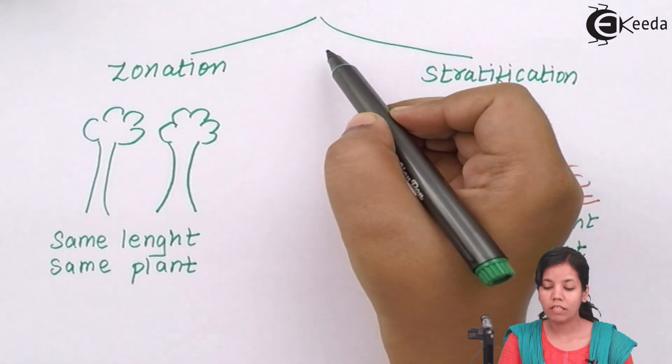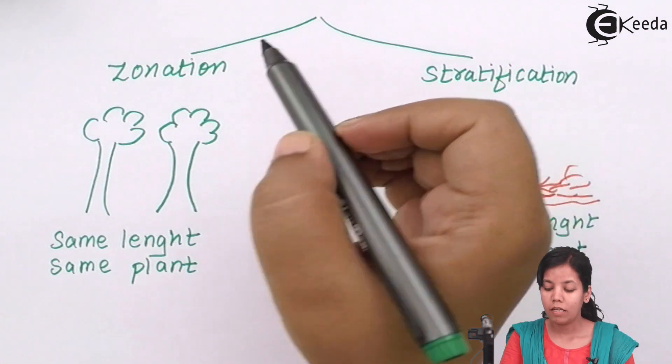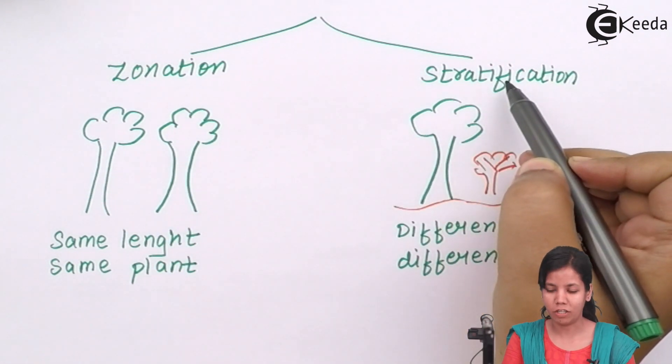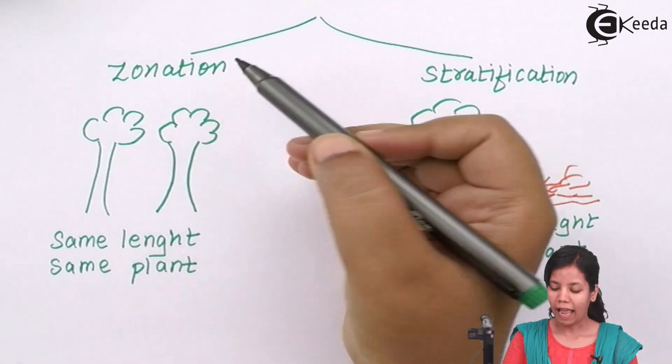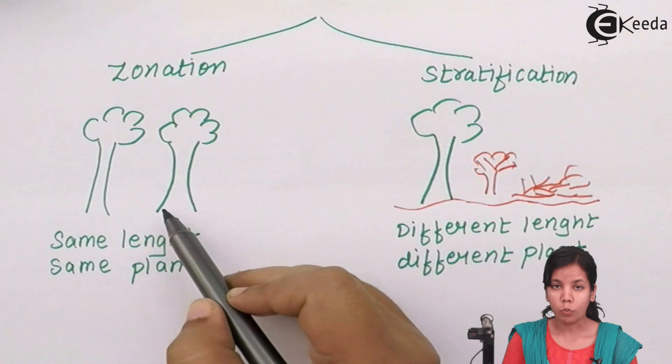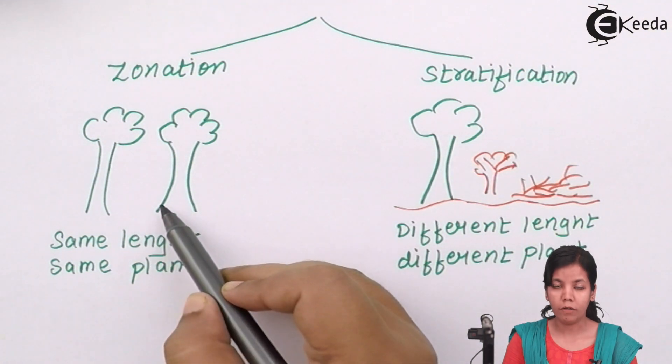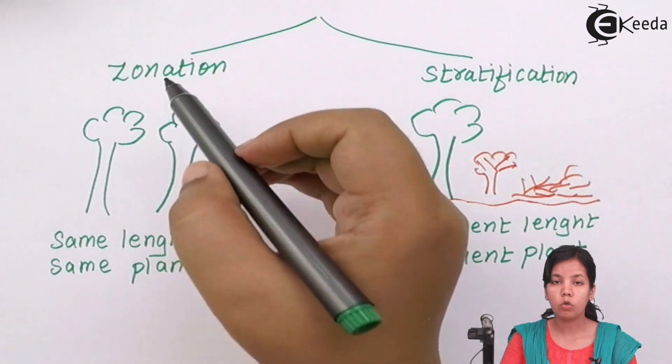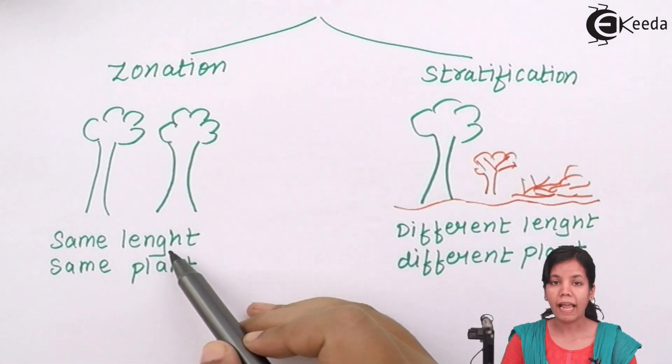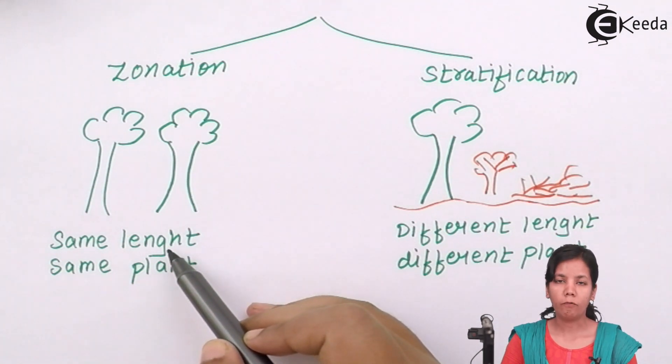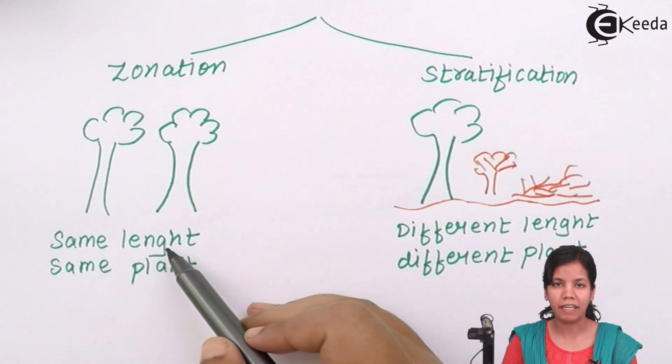Spatial organization can be of two types, one is zonation and the other one is stratification. When I say zonation, as you can see in the diagram below, there are two plants which are of similar origin, which are of similar kind and they are of same length, that is called as zonation. Same plant and of same length, approximately same length. For example, a forest full of mangoes, that is zonation type of spatial organization.